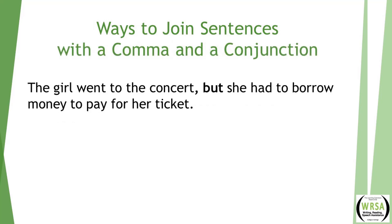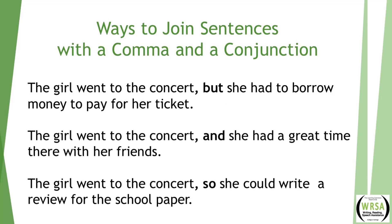The third way to join sentences is with a comma and a conjunction. Take this example: 'The girl went to the concert, but she had to borrow money to pay for her ticket.' We have a subject and a verb in the first sentence — the girl went. Following the conjunction, we have another sentence: she had to borrow money. The conjunction and the comma work together to show the reader the connection between these two sentences. If you omit the conjunction and join sentences only with a comma, this is called a comma splice. If you find 'comma splice' written on your papers by your instructors, this is what he or she is referring to.